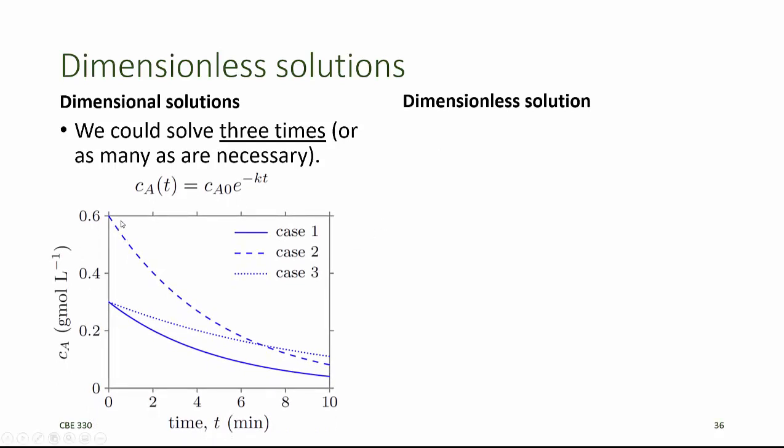If we do that, we can plot the solution, and it looks something like this. We have three different cases, representing different combinations of CA0 and K for the first 10 minutes.